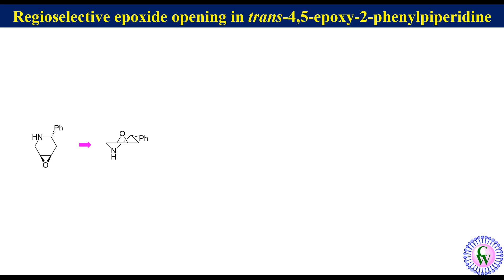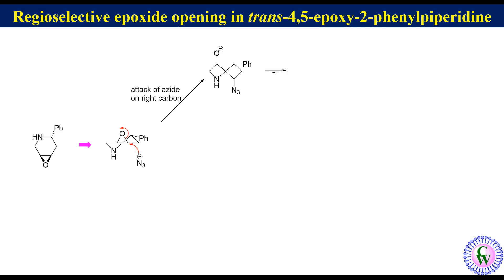Attack of azide on the right side carbon will allow the right carbon to move down and the left carbon to move up, leading to the formation of an azido-alkoxide in a twist-boat conformation. After ring flipping, this can convert to a more stable chair conformation with all the substituents at equatorial position, and after protonation gives a product with all substituents equatorial.